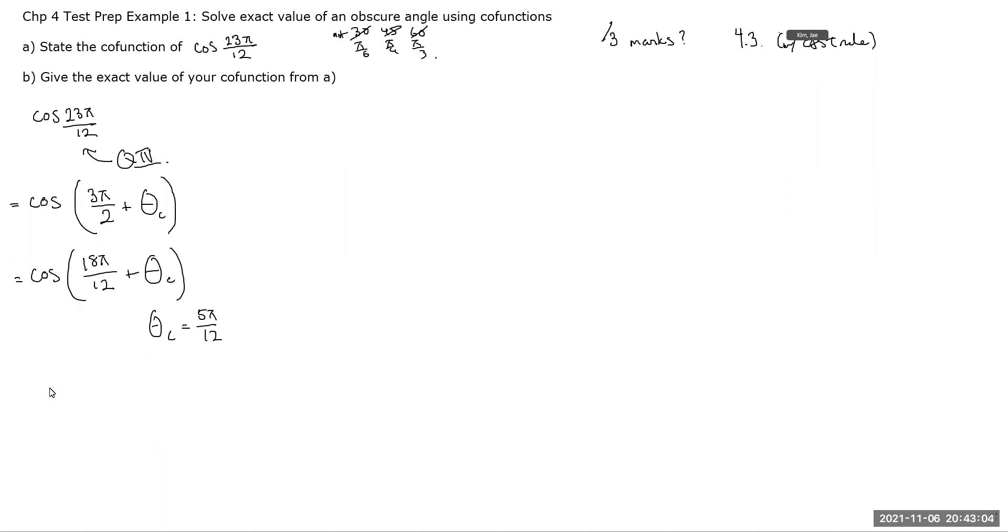So, since I know what the co-related angle is going to be, if I were to use co-functions to write an equivalent equation, rather equivalent expression, this is going to turn into sine, positive or negative for now, of 5π over 12, okay, so that angle is preserved.